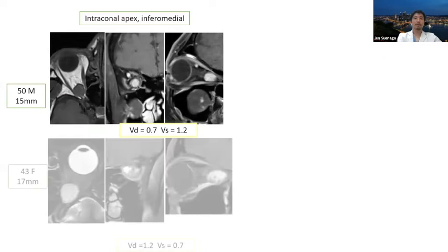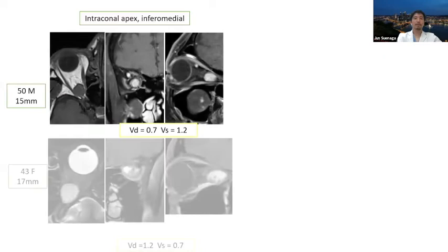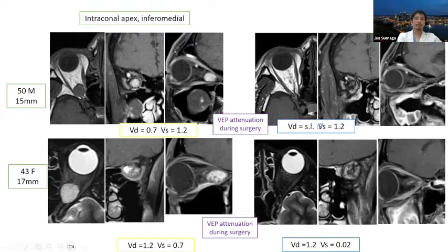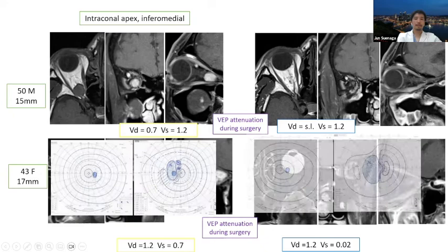Two bad cases — I regret these cases. VEP attenuation was observed during surgery, and severely, visual function was diminished in both. The orbital apex, especially the area inferomedial to the optic nerve, is very dangerous — I believe because the central retinal artery runs just below the optic nerve in this area.